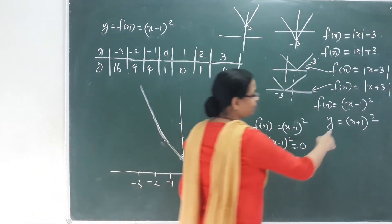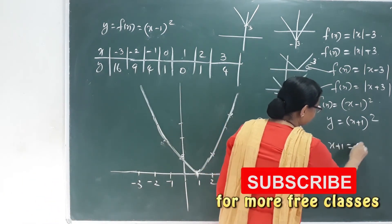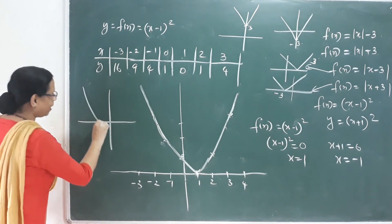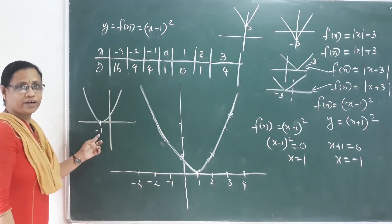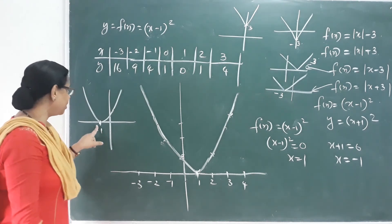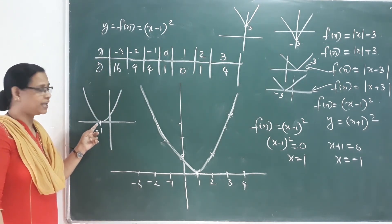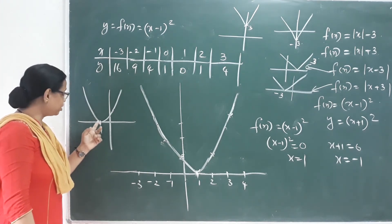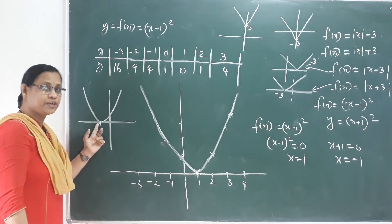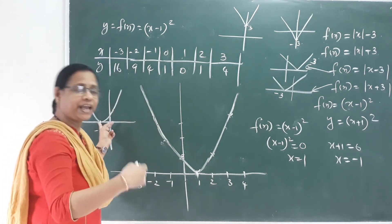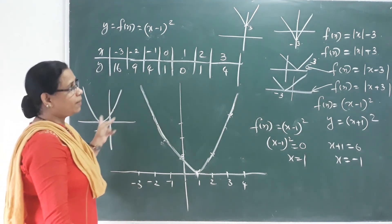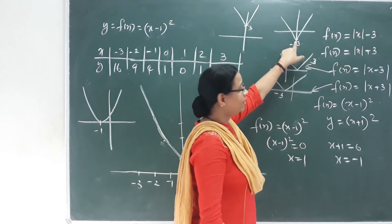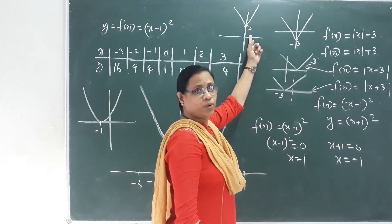The next consideration: x plus 1 equals 0, so x equals minus 1. That means the graph is created with vertex at x equals minus 1. How do we call this domain range? Domain is all real values. Range: from 0 to positive infinity. This is the vertex.